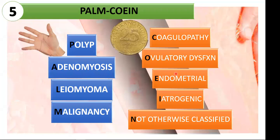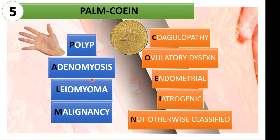We now proceed to the last section: the FIGO PALM-COEIN classification. This is a very high-yield topic — in clerkship, you will frequently encounter this, and your resident will ask you about the differentials for AUB. Remember AUB every time you see a coin on your palm. PALM stands for Polyp, Adenomyosis, Leiomyoma, and Malignancy — these are structural etiologies. COIN stands for Coagulopathy, Ovulatory dysfunction, Endometrial, Iatrogenic, and Not otherwise classified — these are non-structural causes. We will go through each one by one.